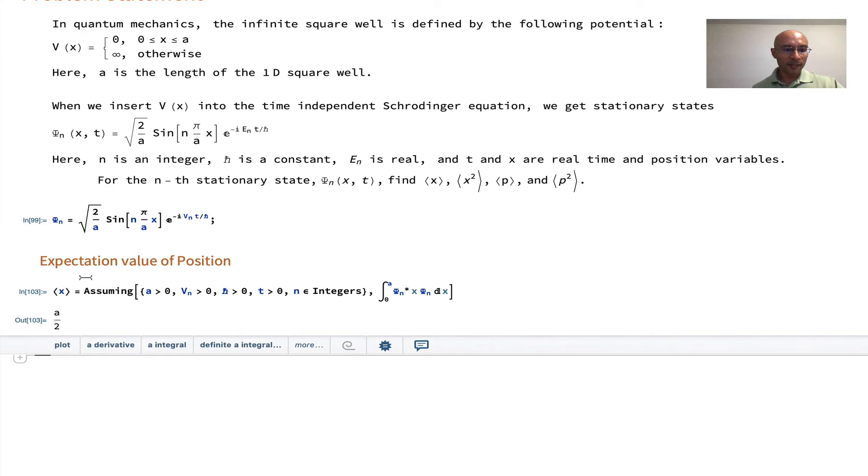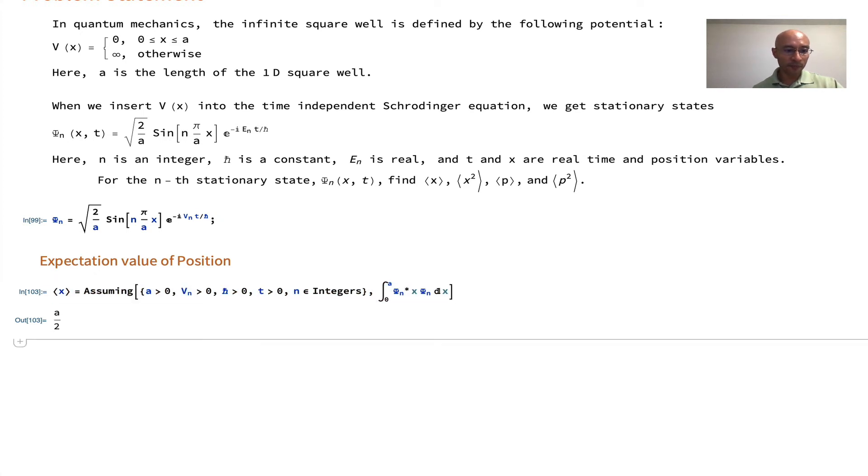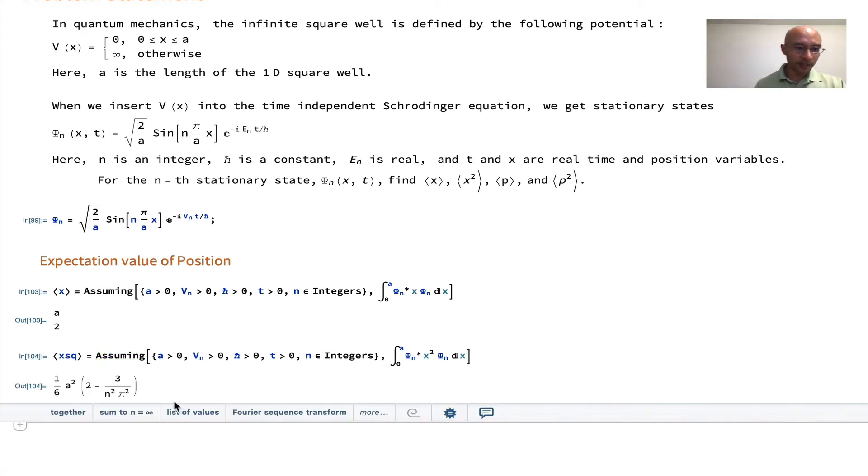It's an easy operation to make the expectation value of x squared. I just copy, paste. And here I'm going to put xsq. Mathematica won't like it if I put in the x to the power of 2. It'll think I'm trying to evaluate something on the left-hand side. I change that x to x squared, and then shift enter. And there's an expression.